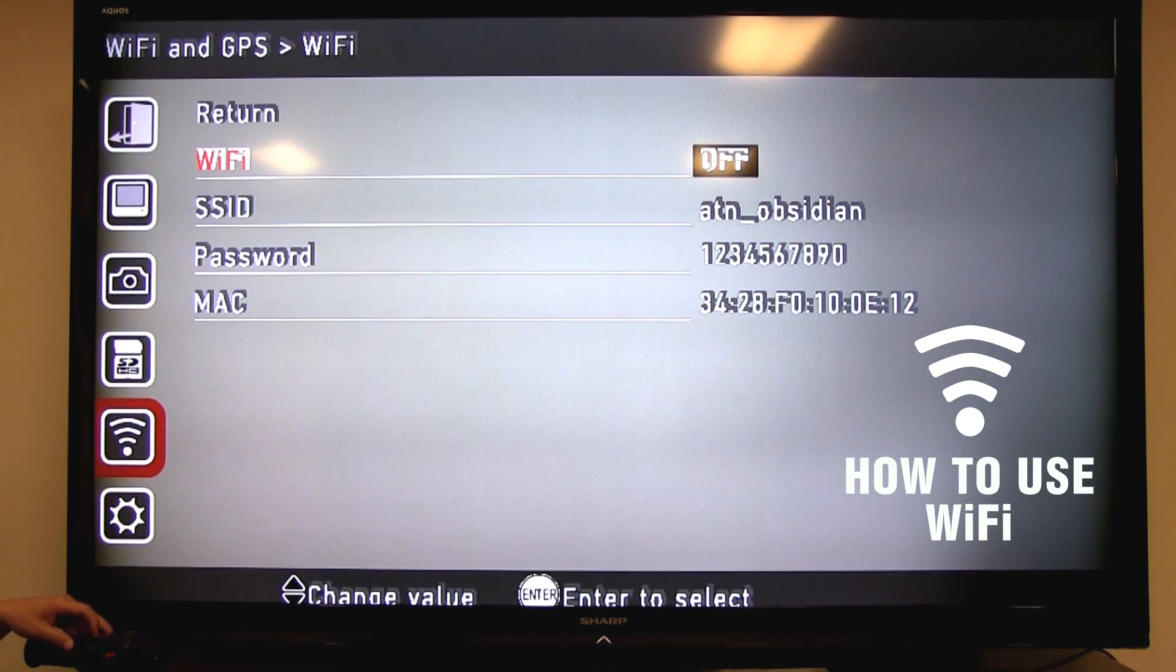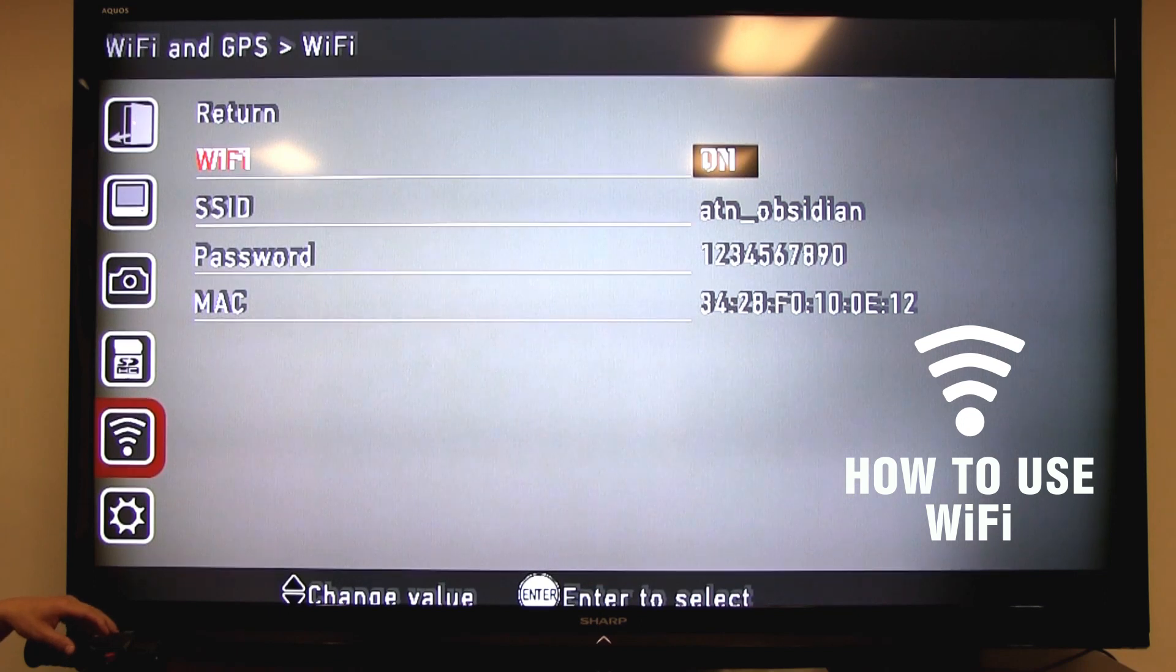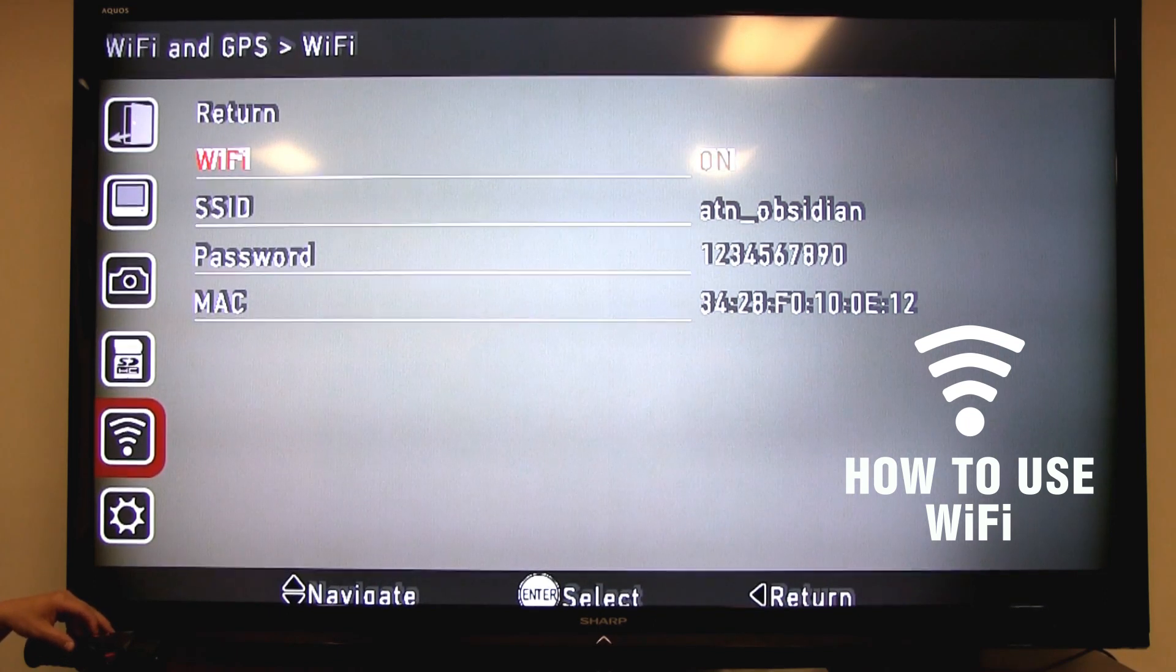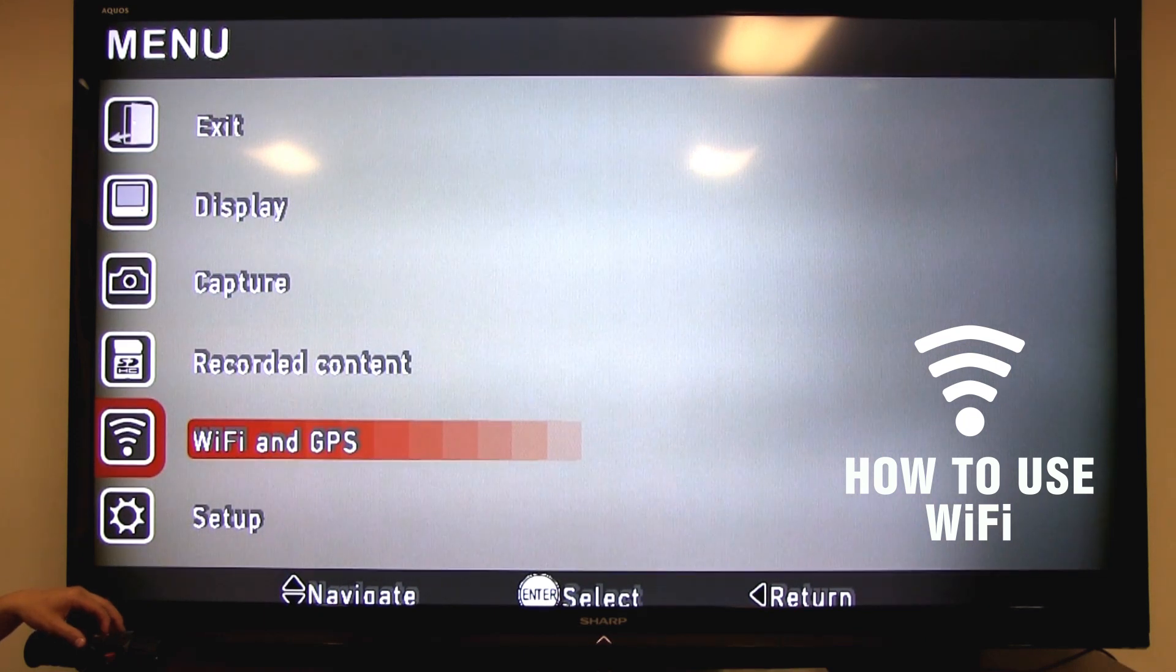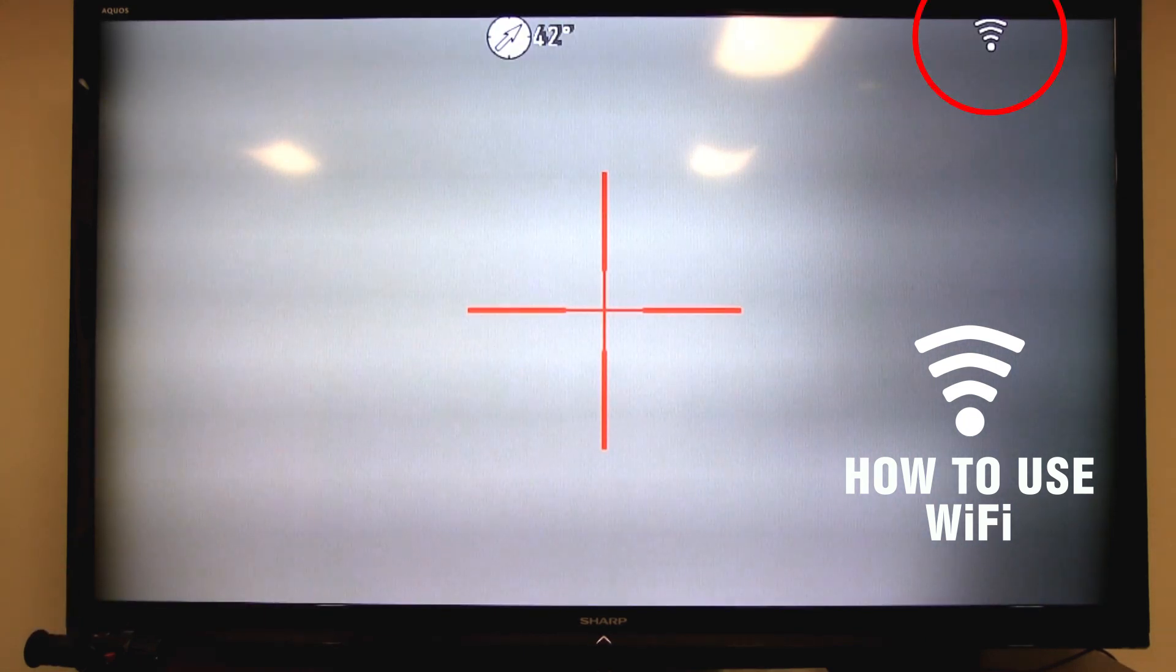Select Wi-Fi, press enter, and press either up or down to turn it on, and press enter. Now you'll notice that the SSID is ATN underscore Obsidian, which you'll see in your phone or tablet in the available Wi-Fi signals. The password is also below, which is one through zero, and that's what you input as a password on your phone or tablet. Backing out of the menus is the same by pressing the left arrow. Now we know Wi-Fi is on by looking at the icon in the top right corner of our screen.